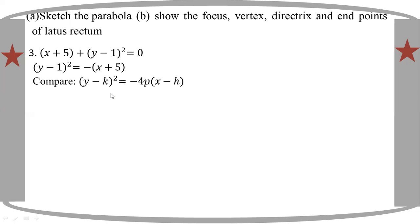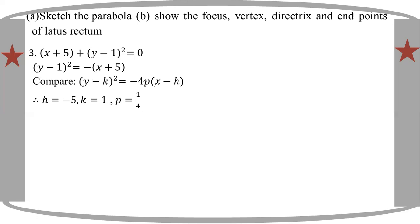We compare it. k is equal to 1, x is equal to minus 5. 4p is equal to 1, so p is equal to 1 by 4. The axis opens to the left.